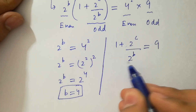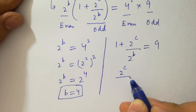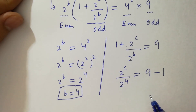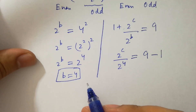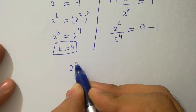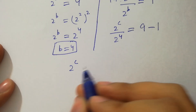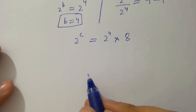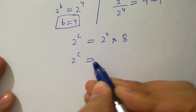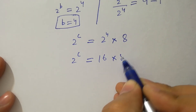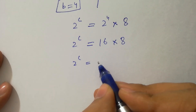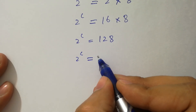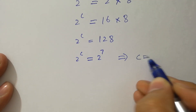Simplifying, we have 2 to the power c over 2 to the power 4 equals 9 minus 1, which is 8. Multiplying both sides by 2 to the power 4, we have 2 to the power c equal to 16 times 8, which is 128. And 128 is the same as 2 to the power 7. So we have c equal to 7.